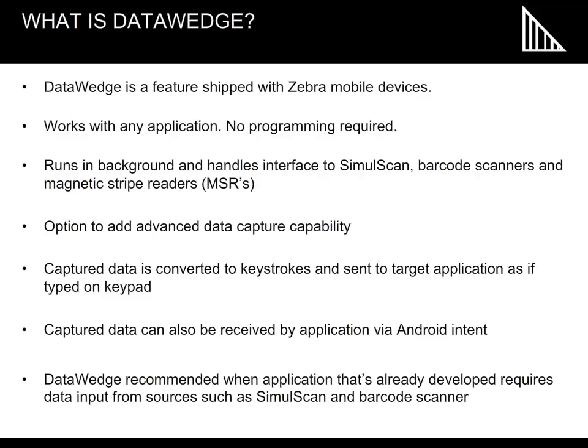With Data Wedge, captured data is converted to keystrokes and sent to target applications as if typed on the keyboard. Note that captured data can also be received by the application via Android intent. It is recommended to use Data Wedge when an application that's already developed requires data input from sources such as SimulScan and barcode scanner.